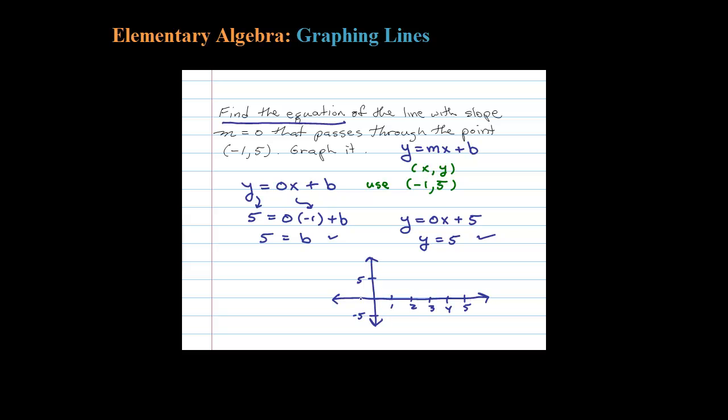Start at the y-intercept 0 comma 5. Rise 0 and run 1. Rise 0 and run any amount, you get a horizontal line.